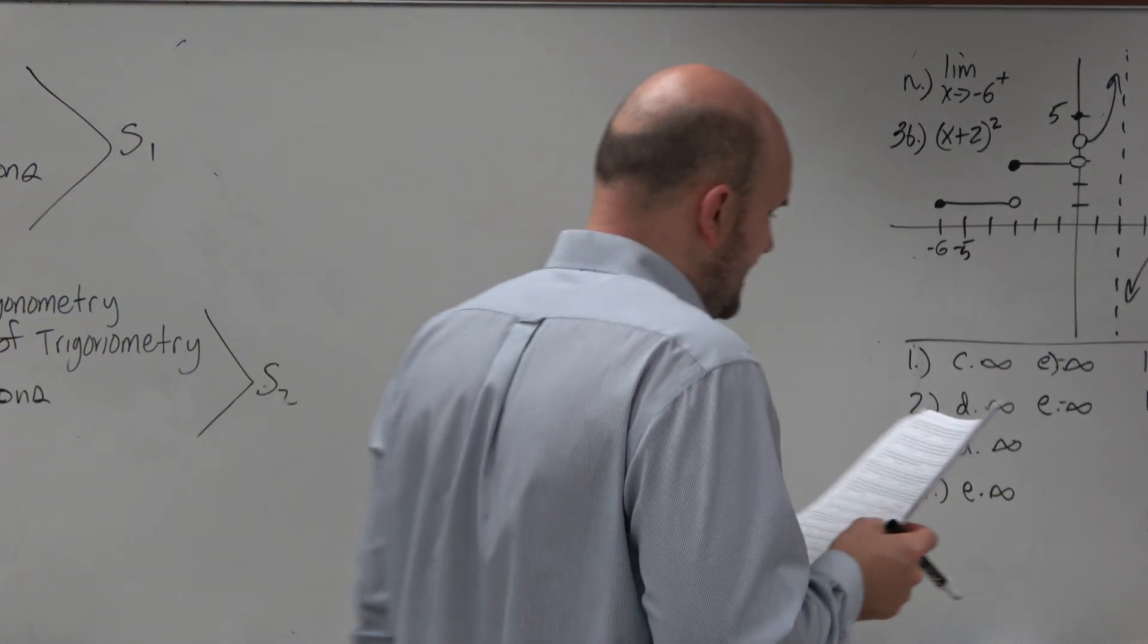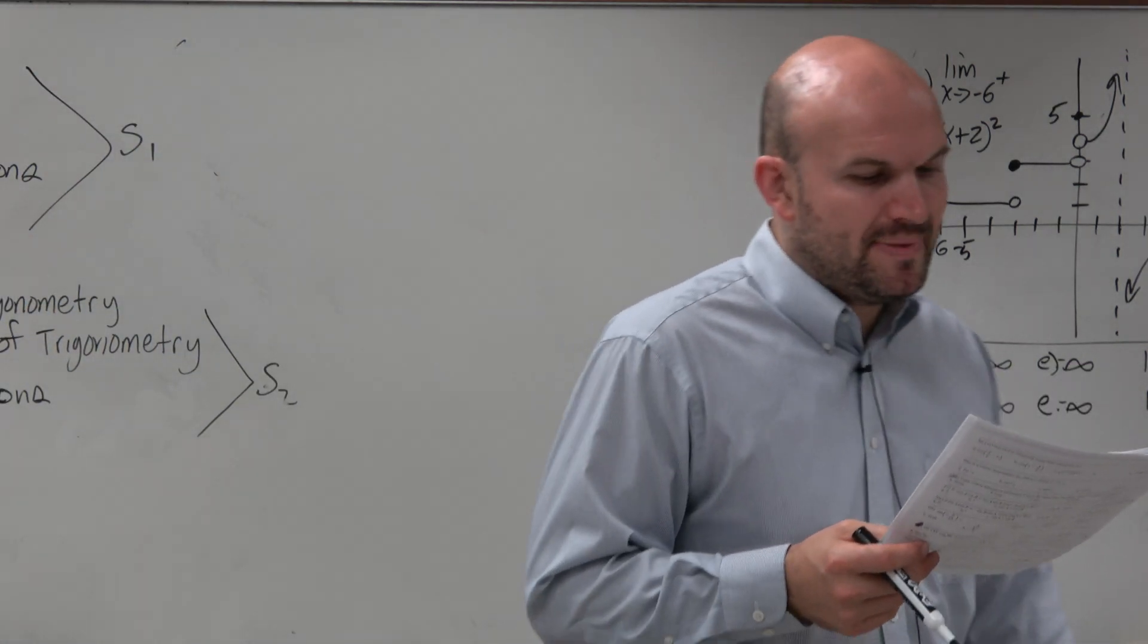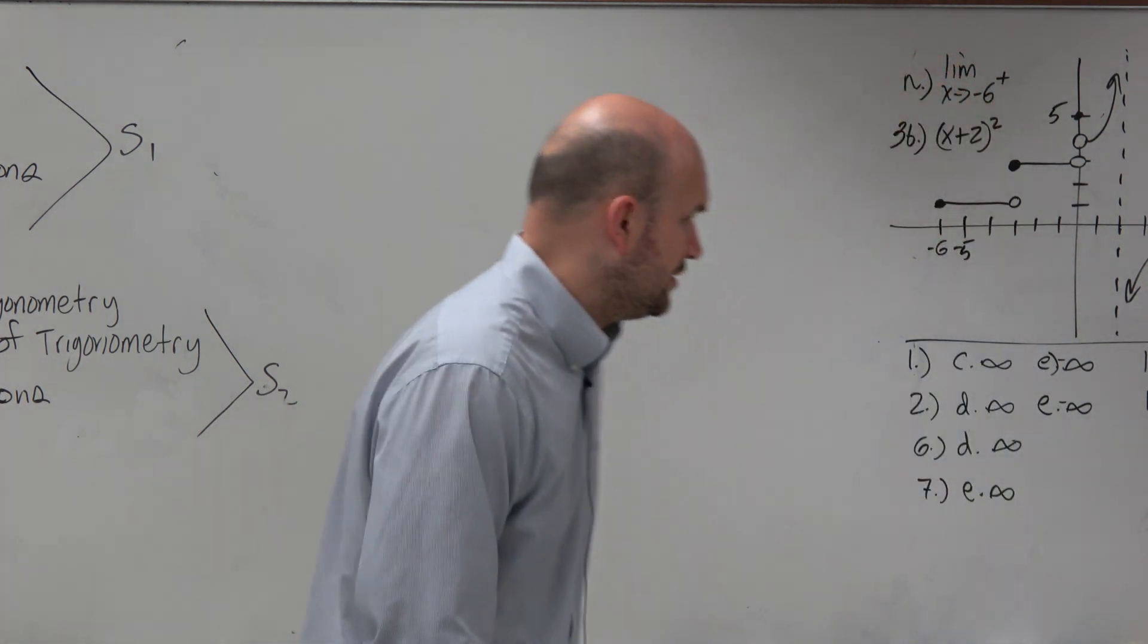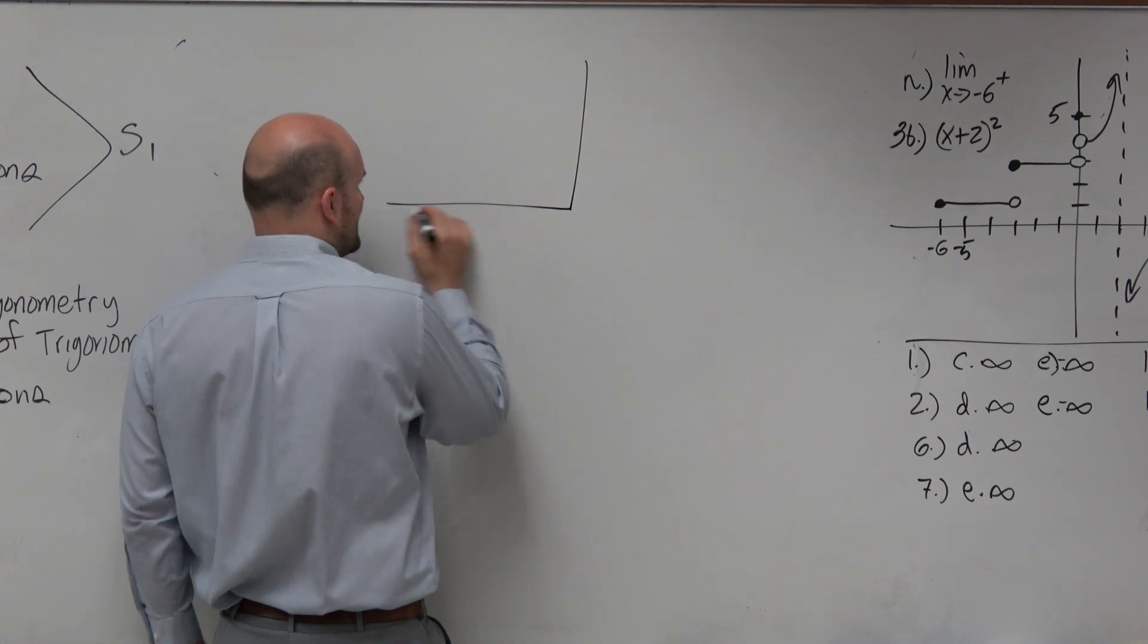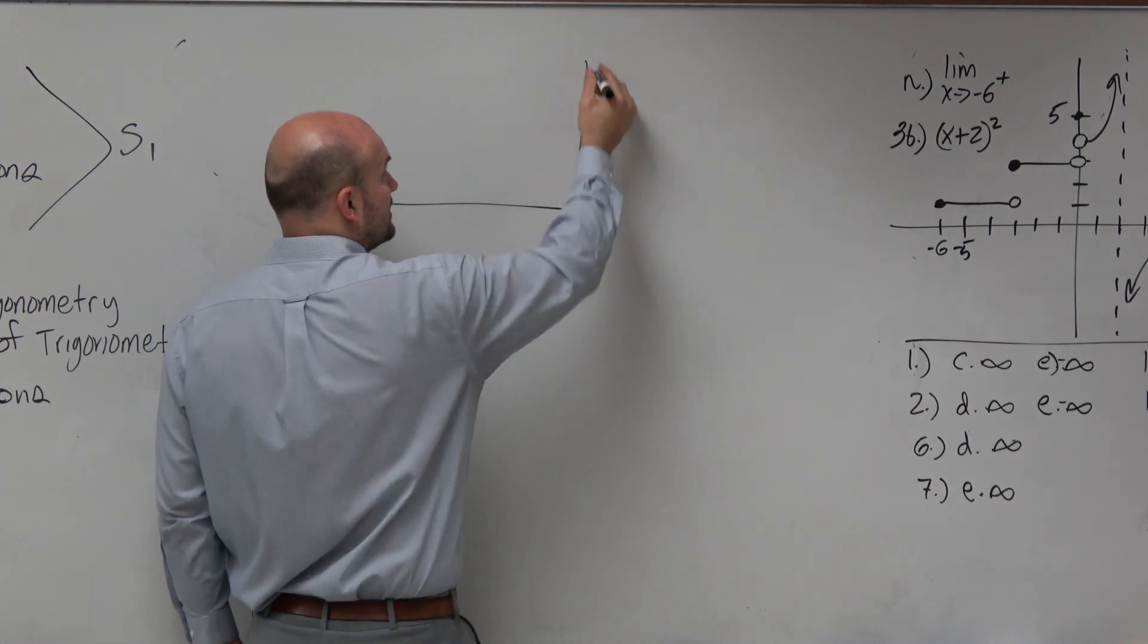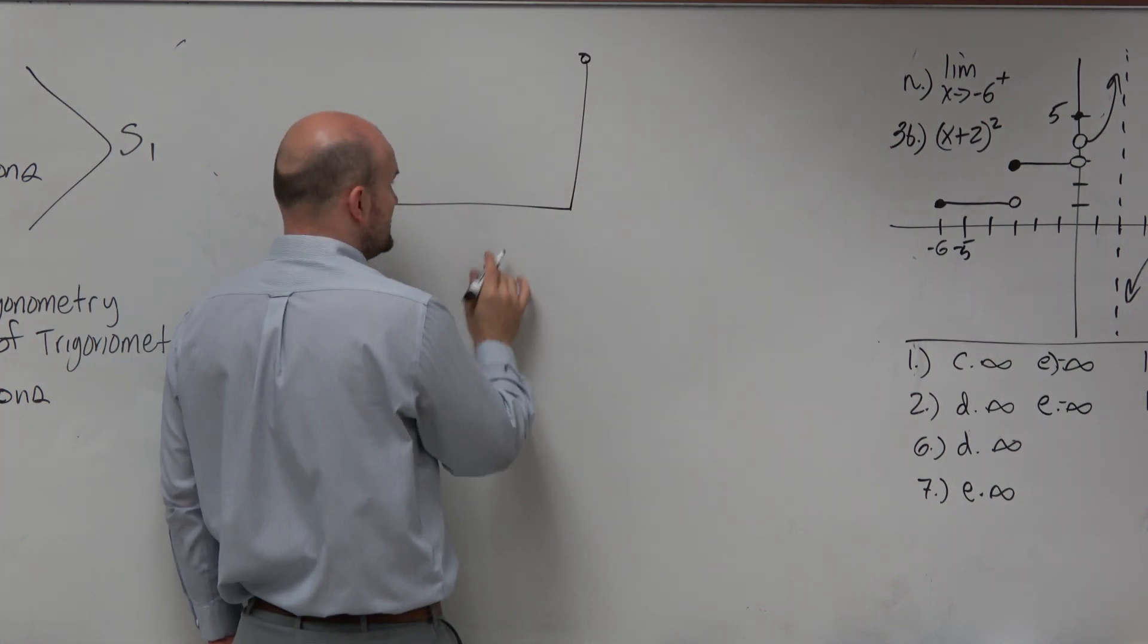Question number 77 says, at a distance 34 feet from the base of a flagpole. So can we go ahead and draw a flagpole? And then a ground. So obviously we can say like that's the ground. Here's a little flagpole, right?